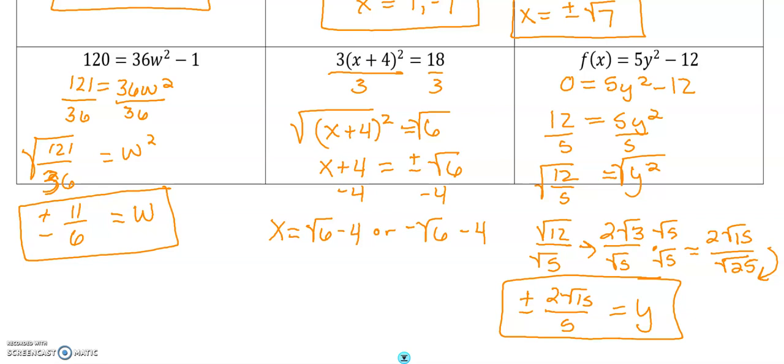So once you get as simplified as you can, you put it into your calculator, your decimals calculator, and get your answer rounded to two digits.